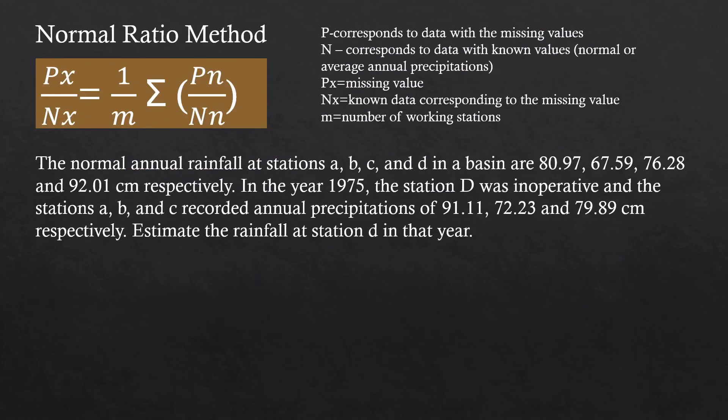Let's solve this problem. The normal annual rainfall at stations A, B, C, and D in a basin are 80.97, 67.59, 76.28, and 92.01 cm respectively. However, in the year 1975, Station D was inoperative and Stations A, B, and C recorded annual precipitations of 91.11, 72.23, and 79.89 cm respectively, while Station D was defective that year. We need to estimate the rainfall at Station D in 1975.